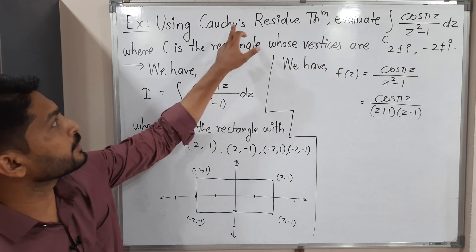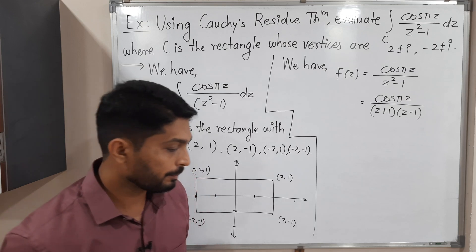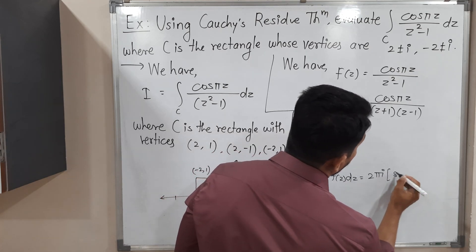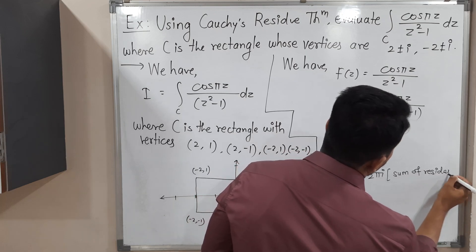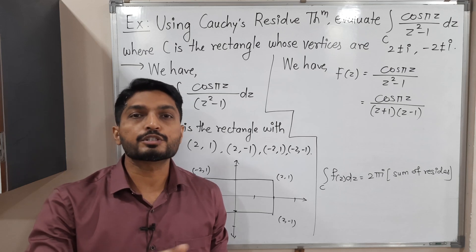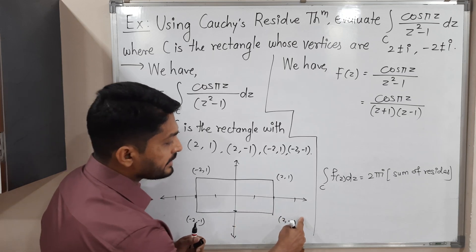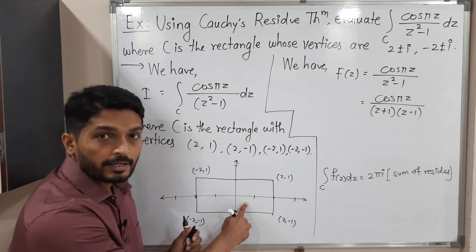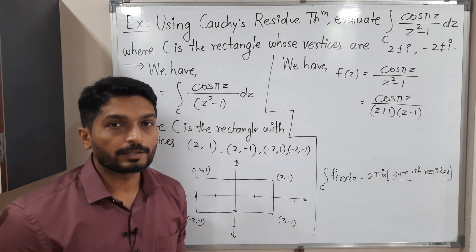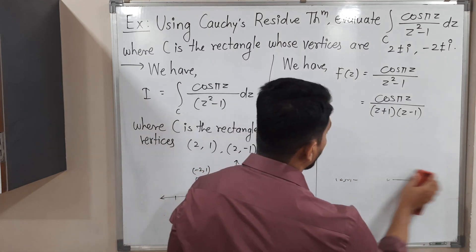Our target is to find the value of that integration using Cauchy's residue theorem. That theorem states: the integral over C of f(z) dz = 2πi times the sum of residues. We find the singular points (where the denominator is zero), check which lie inside C, compute their residues, sum them, multiply by 2πi, and that gives the value of the integration.